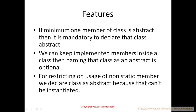We can keep implemented members inside a class, and naming that class as abstract is optional. The class which we are implementing using that abstract class — we can name it as abstract or just leave it as a concrete class. In order to declare a class as abstract, you need to have at least one abstract member. If all members are implemented and you choose to name the class abstract, that is optional.